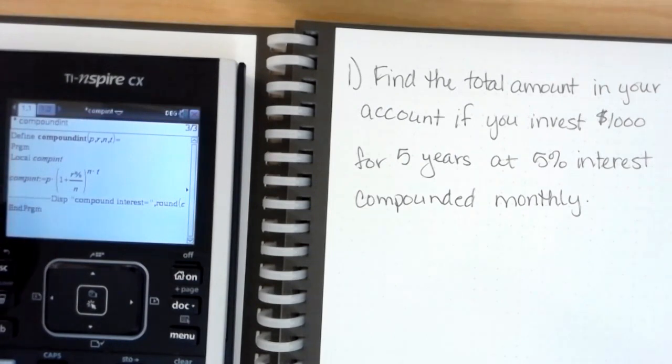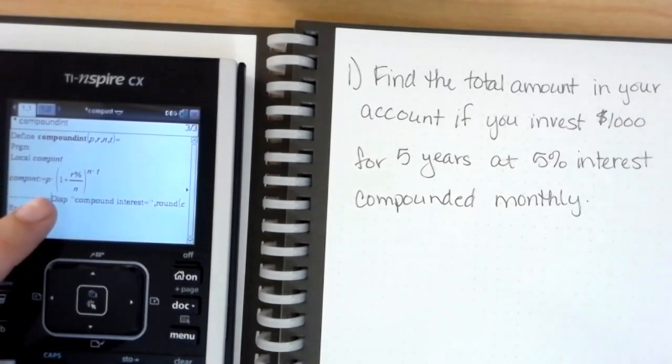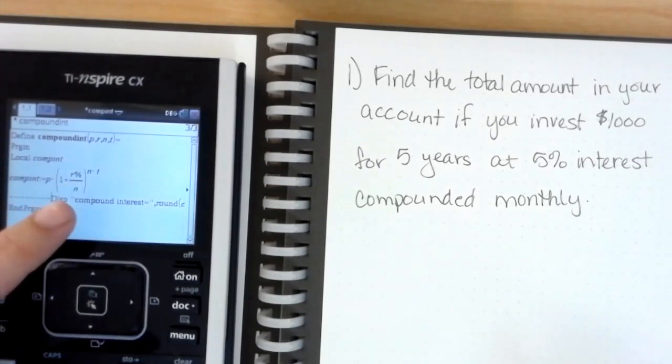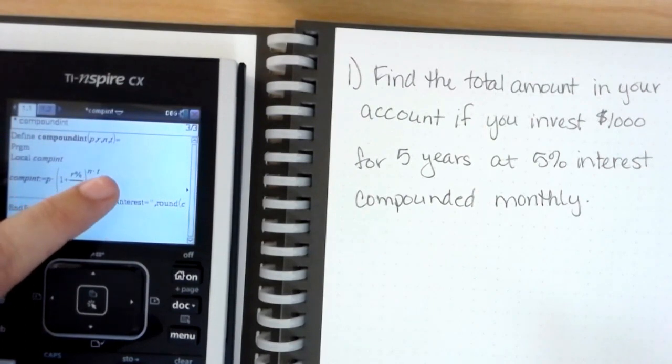It will open up and you want to double check to make sure the equation is correct. This equation is on the bulletin board, so we have the P which is principal times parenthesis one plus r percent over n which is the number of payments raised to the exponential of the number of payments times the t, the number of years.